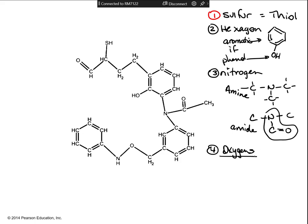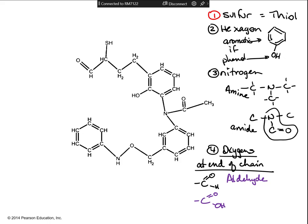The last ones are the oxygens. To pick out the oxygens, look first: do we have oxygens at the end of a chain? If you see a double bond oxygen and a hydrogen at the end of a chain, that means it's an aldehyde. If you have a double bond oxygen and an OH at the end of a chain, that's a carboxylic acid — those are always on the end, you'll never see them in the middle. So if you see an oxygen hanging off the end of a chain, it's going to be either an aldehyde or a carboxylic acid.